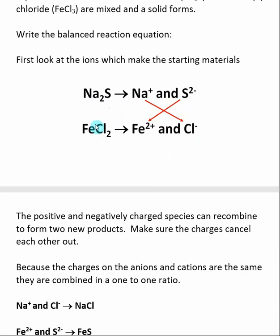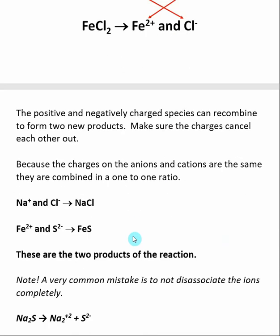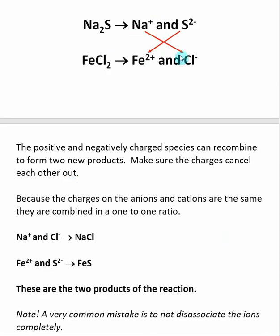When we mix aqueous solutions of these two soluble salts, the ions have a chance to recombine. The positive and negatively charged species react to form two new products: we take the positive from one and the negative from the other, and vice versa, to make two new ionic species. One of the most important things when making these new ionic species is to make sure the charges cancel out. This was covered during nomenclature. In this case, our new combination is Na+ and Cl−. Since they have the same magnitude charge, they combine in a one-to-one ratio to make NaCl.